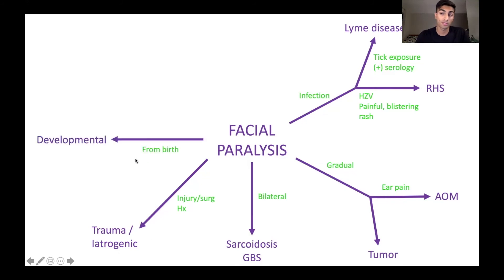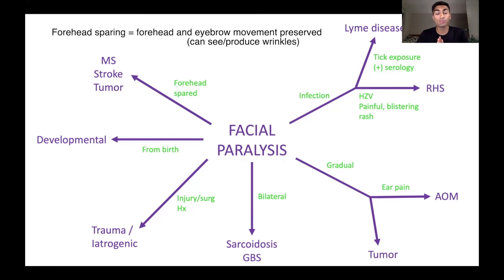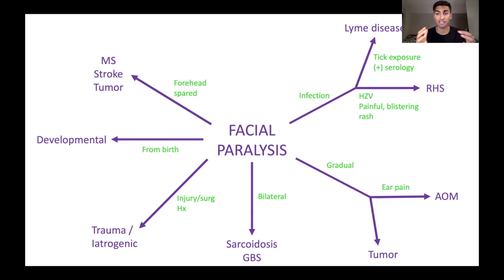If this facial paralysis was present from birth, then we would say it's some sort of developmental cause. Importantly, you want to look to see whether the forehead is being spared. If it is, we would be thinking about more central causes — referring to the central nervous system. Some things we would think about are MS (multiple sclerosis), maybe a stroke, or maybe a tumor in the brain.